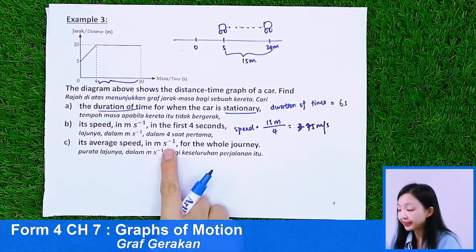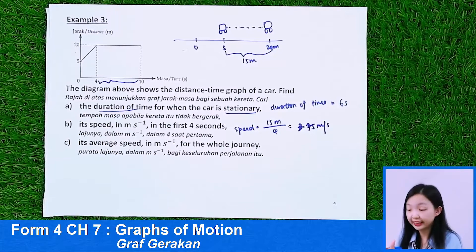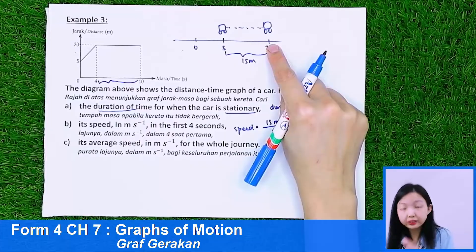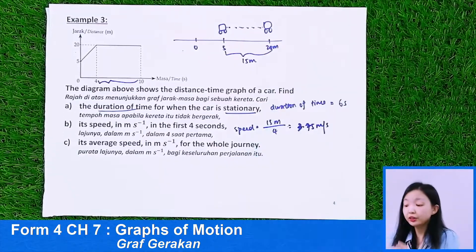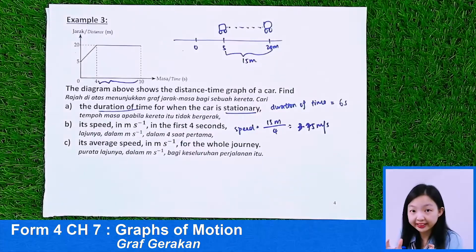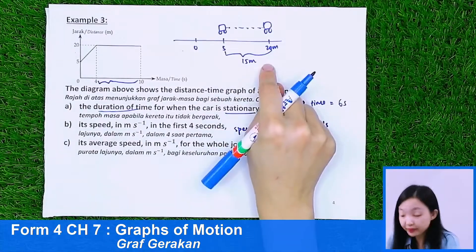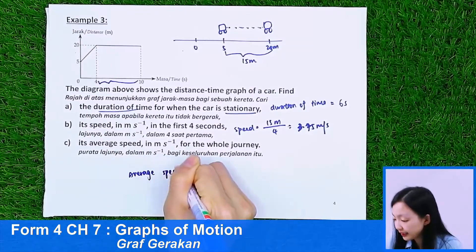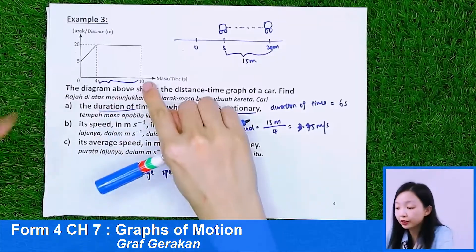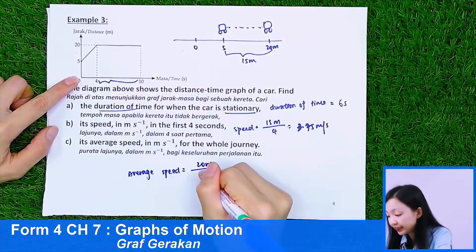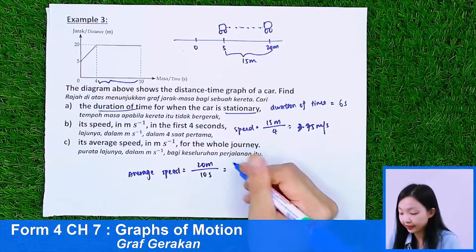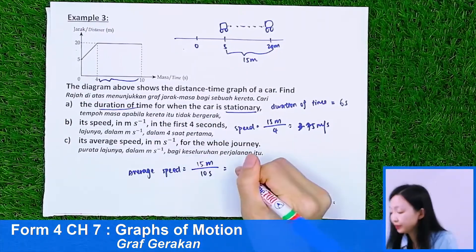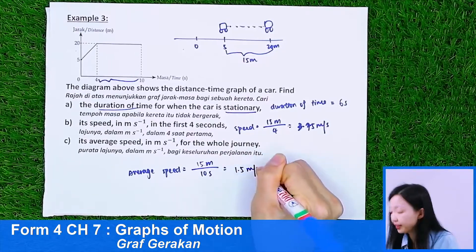For the average speed for the whole journey: after the car reaches 20 meters, it doesn't move again. The total distance traveled is 15 meters. Average speed equals 15 meters over the total time taken of 10 seconds, giving 1.5 meters per second.